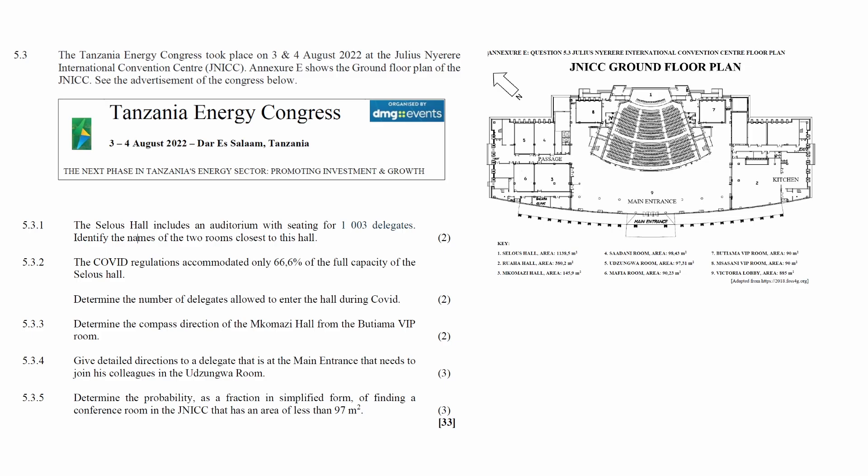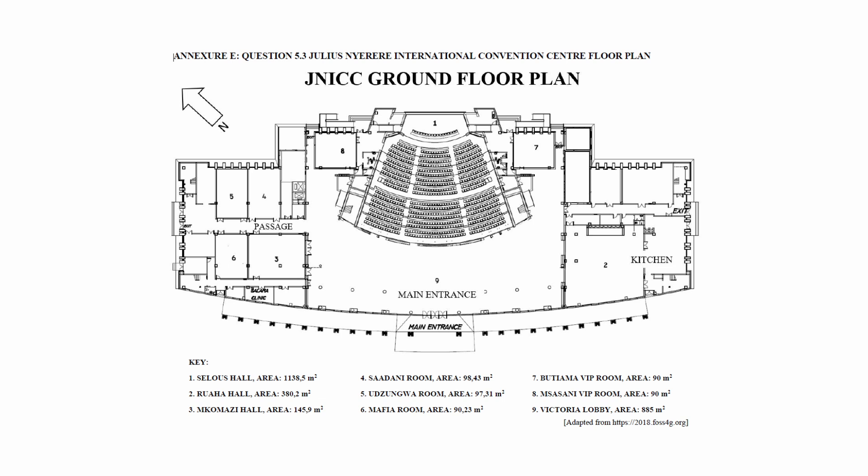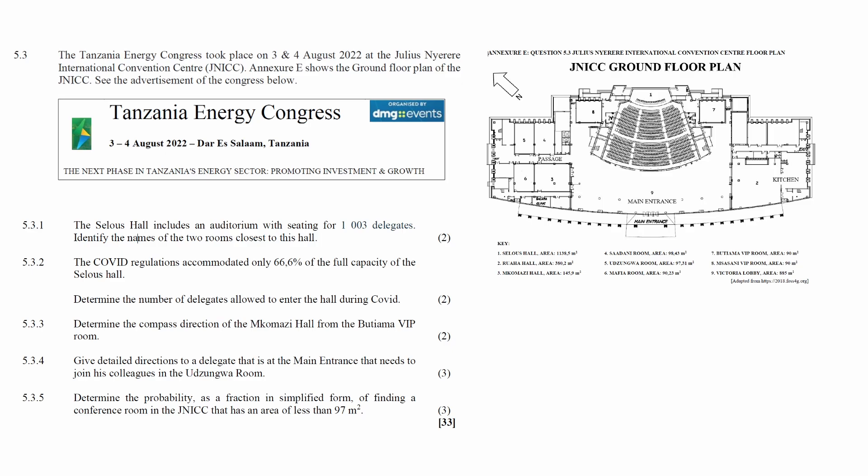Question 5.3 consists of four maps and plans questions and one probability question designed to assess your understanding of direction and event planning in the context of a floor plan. The Tanzania Energy Congress took place on the 3rd and 4th of August 2022 at the Julius Nyerere International Convention Center. Annexure E shows the ground floor plan of the JNICC, along with an advertisement of the Congress.